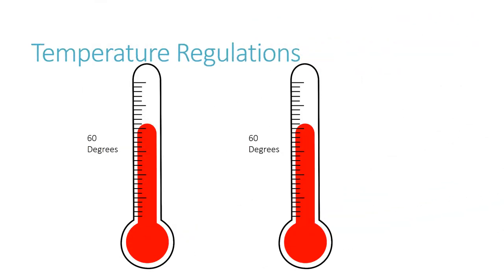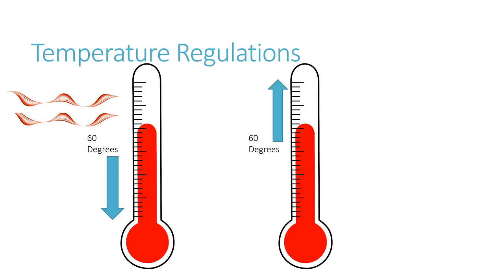When the outside temperature drops below 60 degrees, the heat will turn on and you will not be able to access the air conditioning. When the temperature outside rises above 60 degrees, the air conditioning will come on and you will not be able to access the heat.